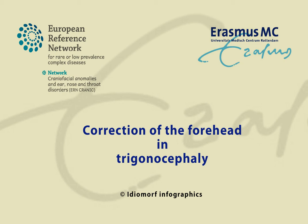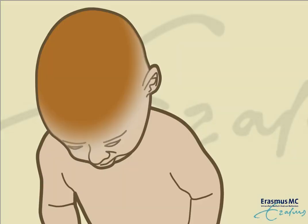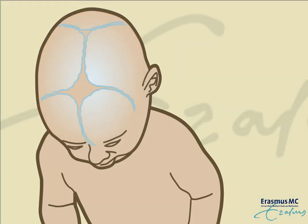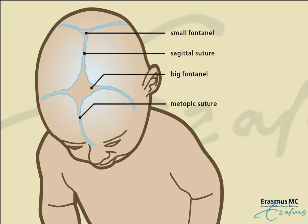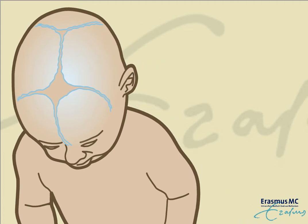Correction of the forehead in trigonocephaly. At birth, the skull is composed of separate skull bones that are connected with skull sutures. The sutures are the growing sites of the skull.